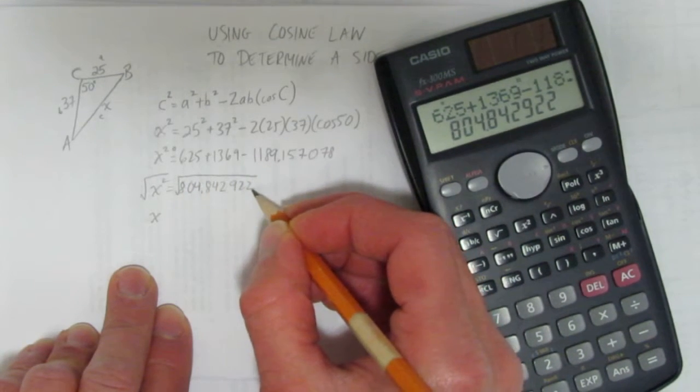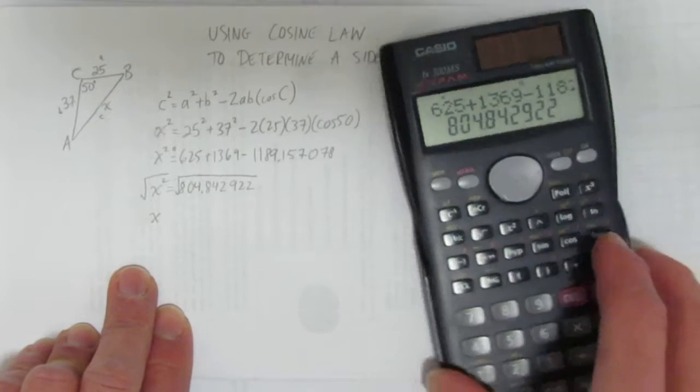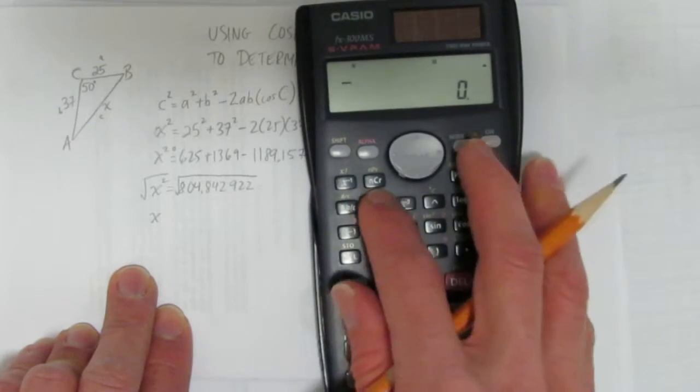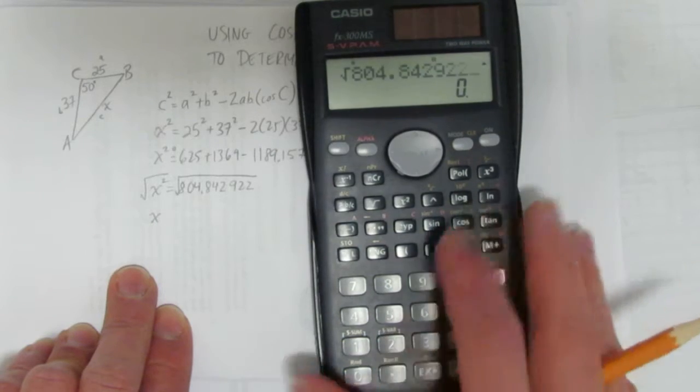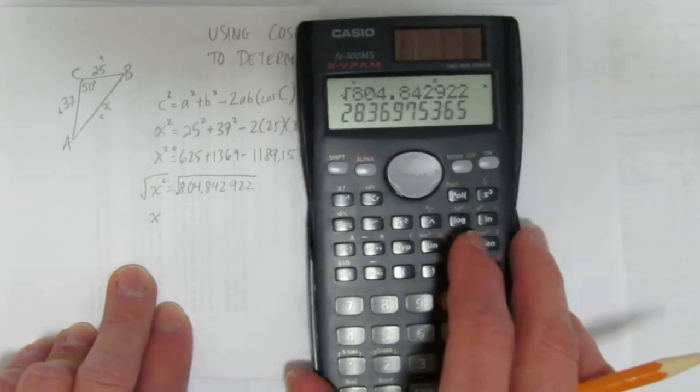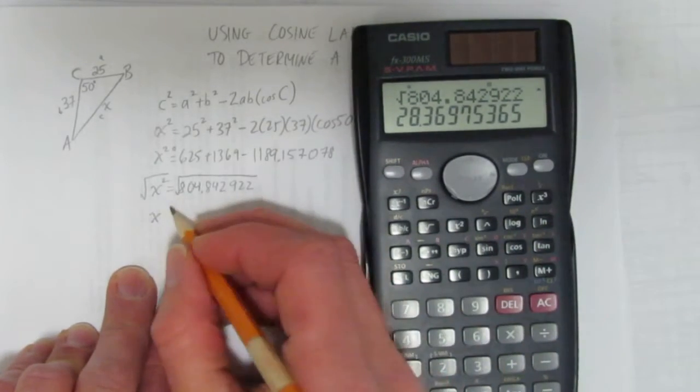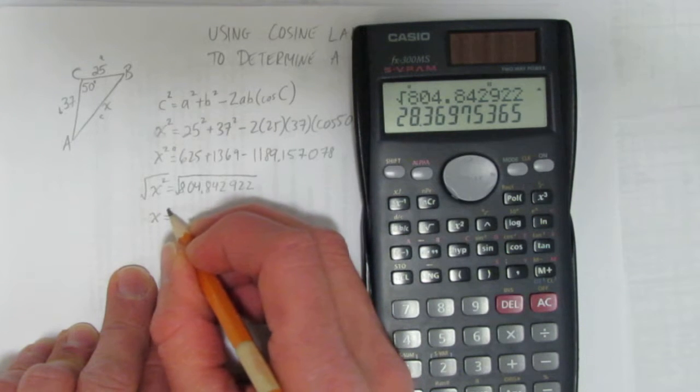Make sure your square root covers the whole thing you're square rooting, including this last digit. It's got to cover the whole thing for good communication. Okay, square root of 804.842922, and you get - I'm going to round to three decimals, because we're doing a side. Usually round sides to three decimals.